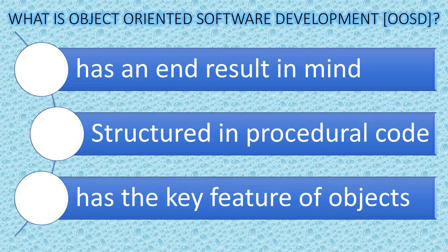Object Oriented Software has the key feature of objects being able to be modified or edited by the program within the attributes in which it is found, making it easier to manage the relationship with other functions found in the programming.